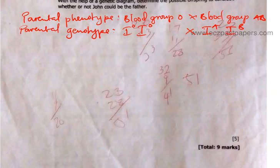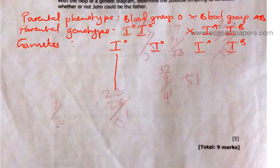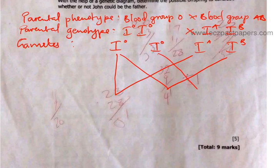Then we have gametes. For gametes, you pretty much just separate the two alleles. So the mother's gametes are I⁰ and I⁰, and the father's gametes are Iᴬ and I᷾. Then you start crossing — the easier way is to cross the first gamete with both of the other parent's gametes, and then also cross the second one with both.